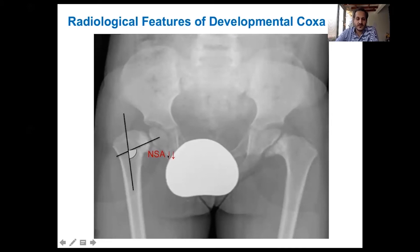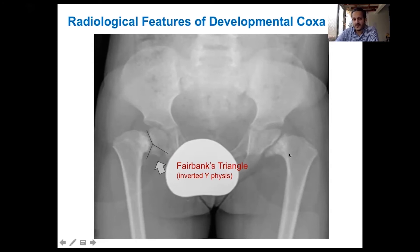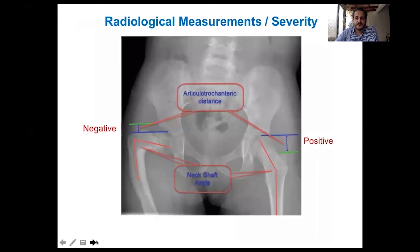We are going to talk mainly about developmental coxa vara. The radiological characteristics are a decreased neck shaft angle, widening of the physis, and sometimes a characteristic metaphyseal triangle called Fairbank's triangle, which causes the physis to take the shape of an inverted Y. This triangle is pathognomonic of developmental coxa vara, but it is not always present.